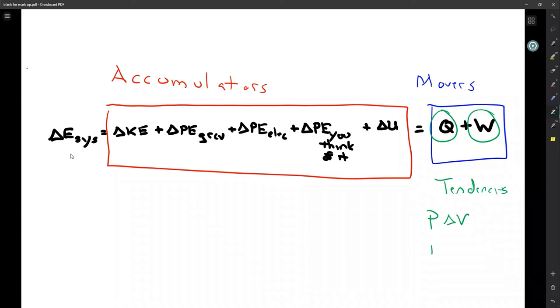Pressure times change in volume is joules, so that goes to the accumulators. Temperature is another tendency. It tells you the direction that the heat interaction is going to take place.